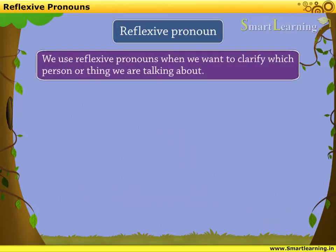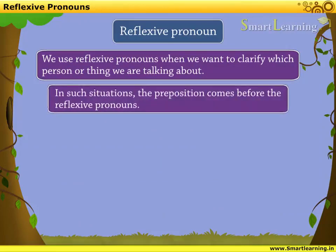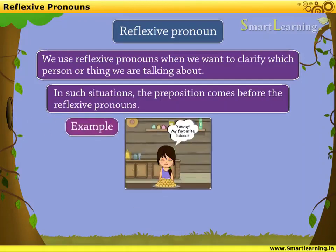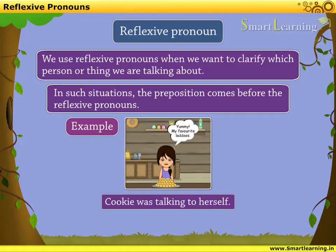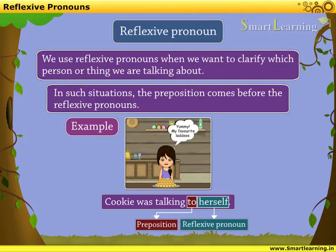We use reflexive pronouns when we want to clarify which person or thing we are talking about. In such situations, the preposition comes before the reflexive pronoun. For example: Cookie was talking to herself. Here, the reflexive pronoun 'herself' is used with the preposition 'to.' It clarifies that the subject Cookie and the reflexive pronoun 'herself' refer to the same person. Also, the preposition 'to' comes before 'herself.'